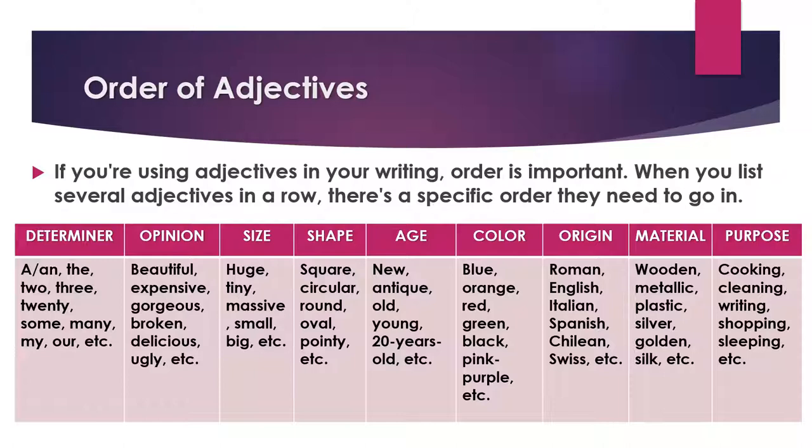Next, material — for example: wooden, metallic, plastic, silver, golden, silk. And finally, purpose — for example: cooking, cleaning, writing, shopping, sleeping, etc.